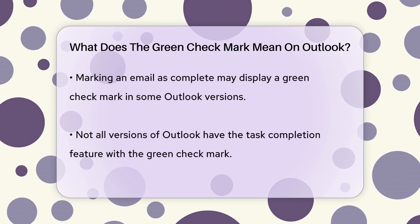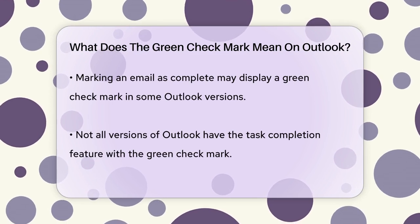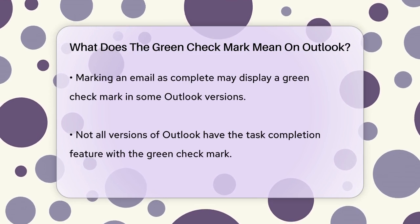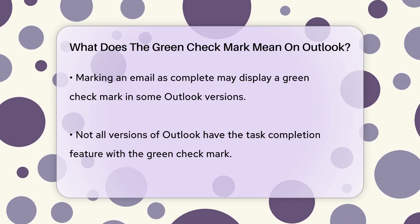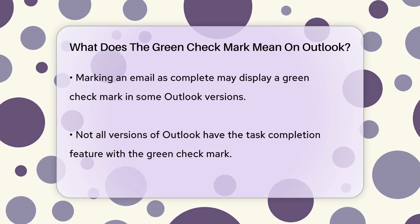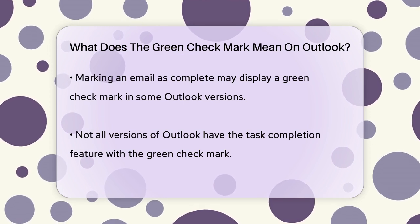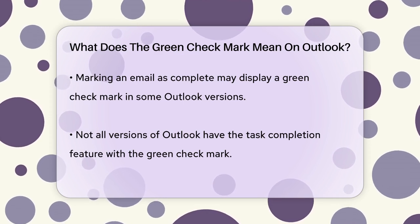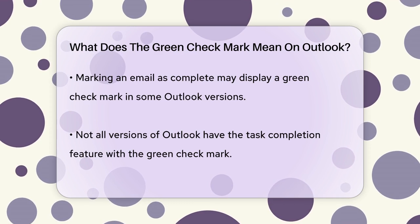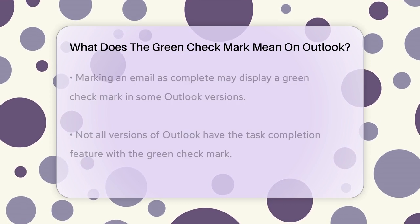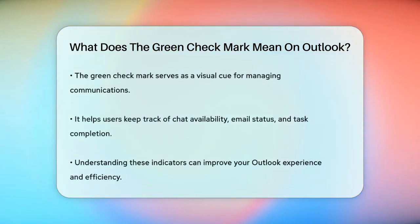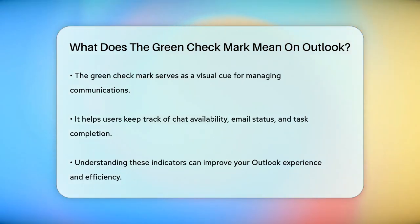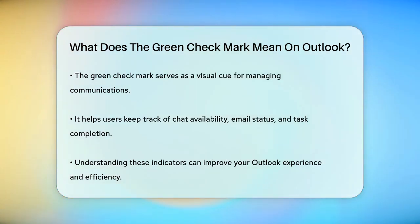In some cases, you might see green check marks in the context of task management or follow-up actions. For example, if you mark an email as complete, some versions of Outlook might display a green check mark to indicate that the task is finished, although this feature is not universally available in all versions.